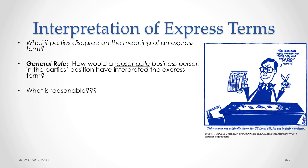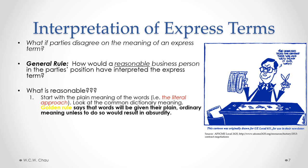The general rule the courts apply is: how would a reasonable business person in the party's position have interpreted the express term? The courts give further guidance through something called the Golden Rule. The Golden Rule says we should start with the plain meaning of the words — the literal approach. We look at the literal, plain meaning of the actual words used in the contract, and the most obvious place to look is usually the dictionary. But if applying that plain, ordinary meaning leads to an absurd result, then we need to look at other interpretive approaches.